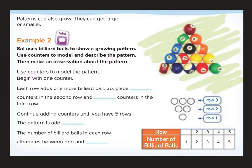Patterns can also grow. They can get larger or smaller. So example two says, Sal uses billiard balls, which is just pool, like a pool table, to show a growing pattern. Use counters. Do we have these counters? No, we could just draw to model and describe the pattern, then make an observation about the pattern. So if we're looking here, we have one in the first row, two in the second row, three, four, five, right? Each row adds one more billiard ball. So place blank counters in the second row, two and three counters in the third row. Continue adding counters until you have five rows. The pattern is add one.